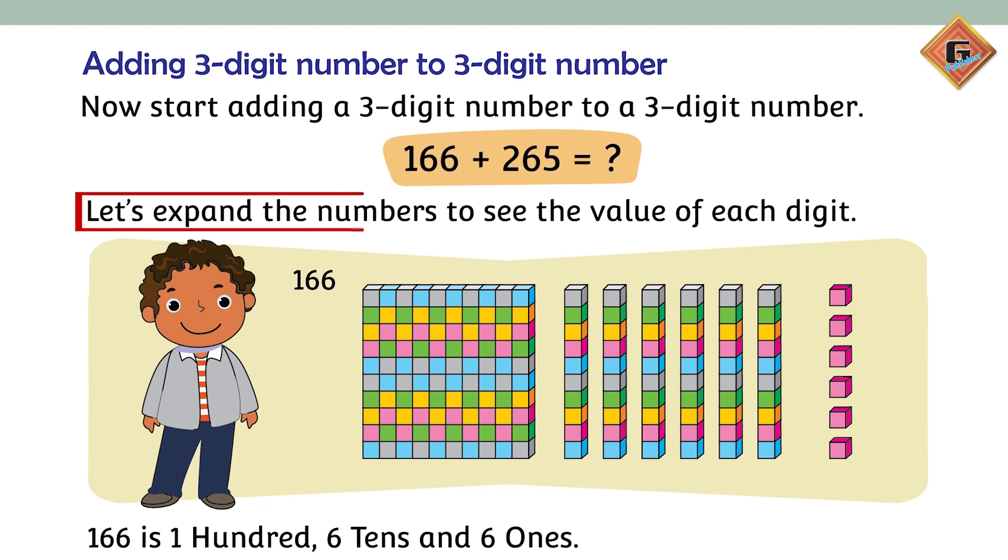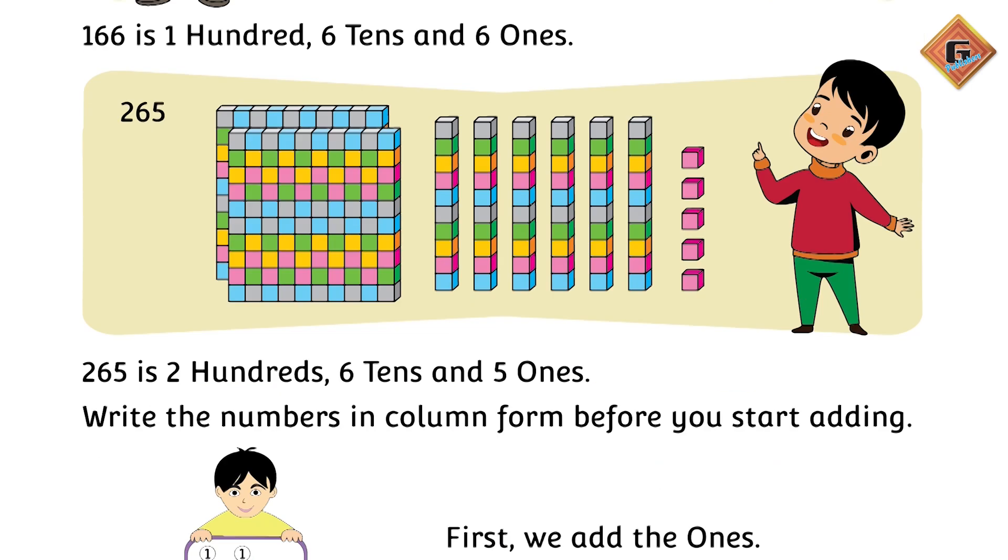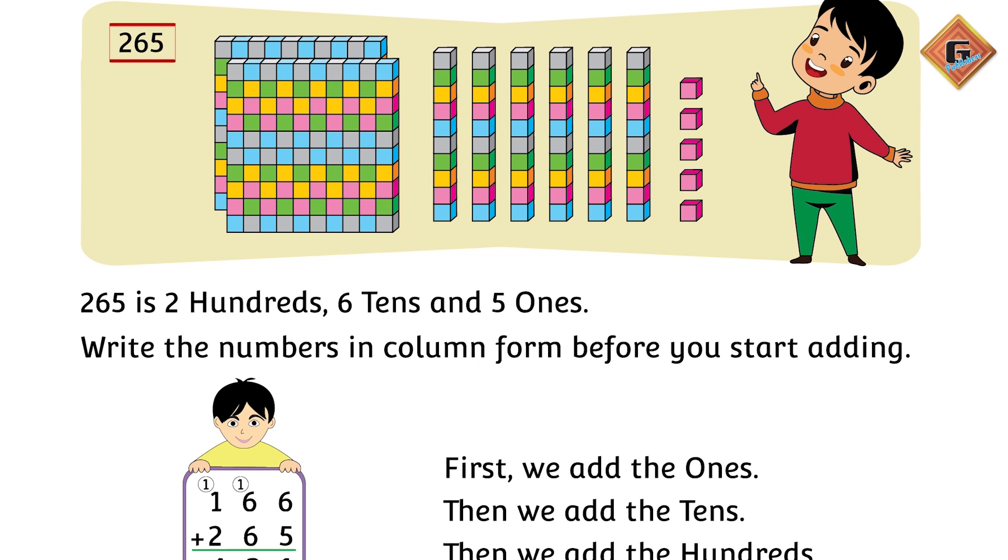Let's expand the numbers to see the value of each digit. Hundreds ki jagha pe humare pas 1 hai, so we have one block of hundreds and how many tens? Very good, 6. And how many ones? Excellent, 6. 166 is 1 hundred, 6 tens and 6 ones. 265 mein humare pas 200, 6 tens and 5 ones hai.